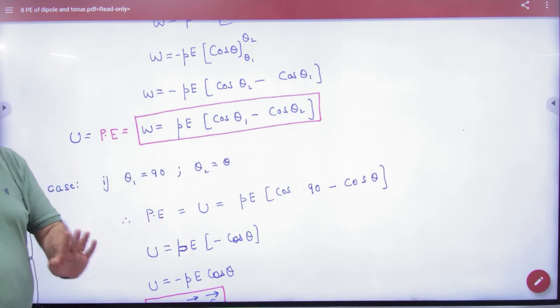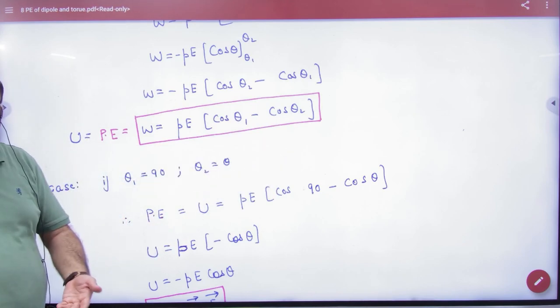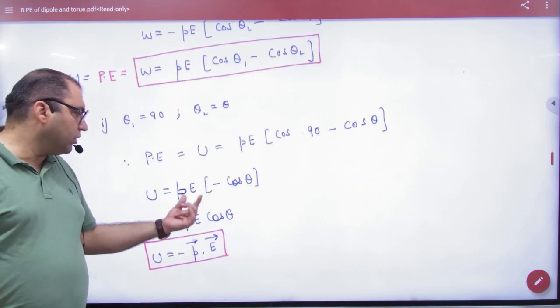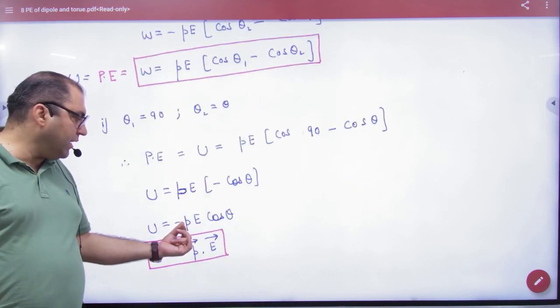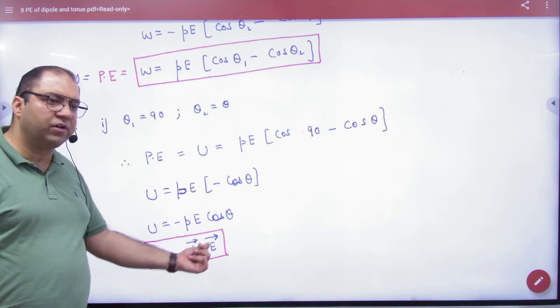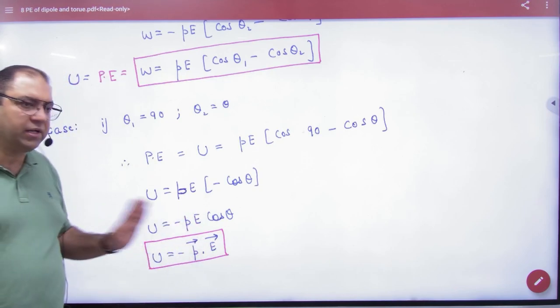Special case. Every time this question will not come. But if 90 to theta, cos 90 is 0, then this term will go. And P is a vector, E is a vector, so P vector dot E vector. This is a special case in which this formula is possible.